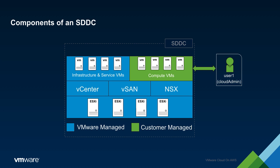Since VMware Cloud on AWS is a managed service, customers are given limited ability to alter infrastructure components. Instead of full admin rights, customers are given a cloud admin role within vCenter, which grants them the ability to create and manage their own VMs. Additionally, customers are given the ability to modify vSAN storage policies, as well as to configure certain aspects of NSX.